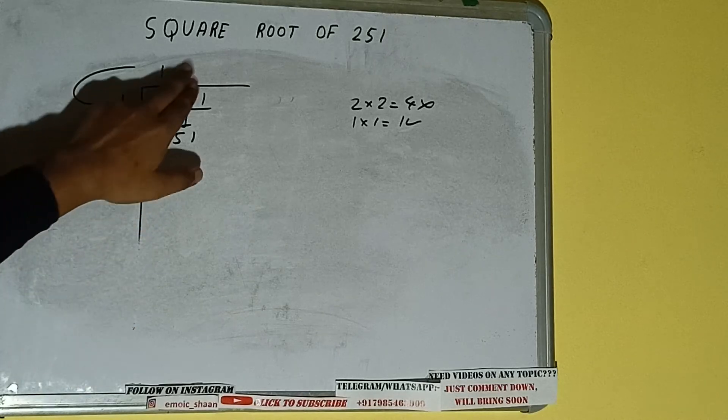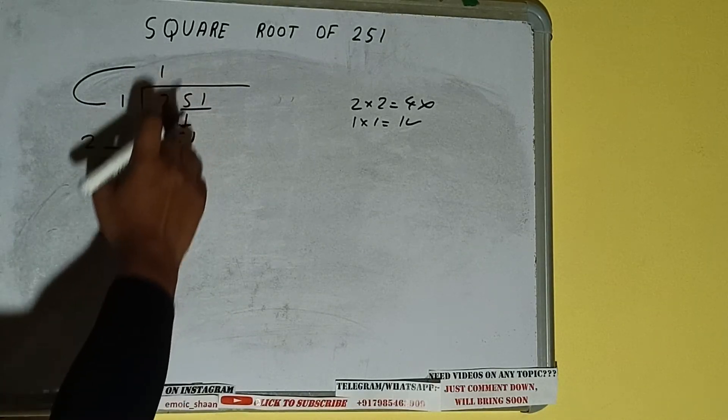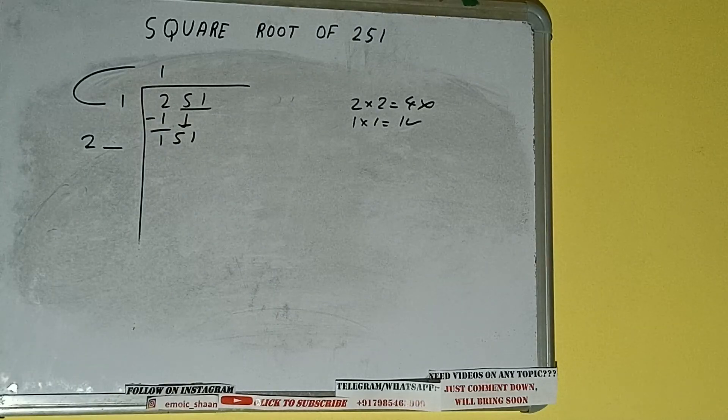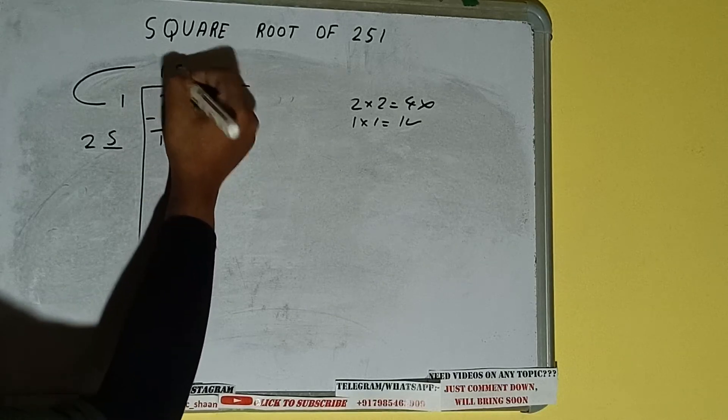Now whatever number we write here, we have to write here also. So if we write six here and six here, we'll get a number greater than 151, so we cannot take six. We'll be taking five. Five here and five here.